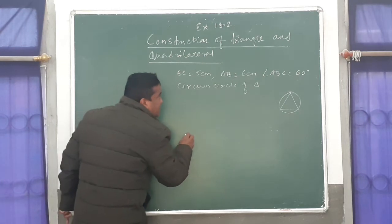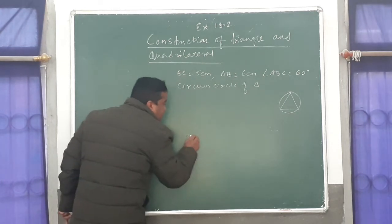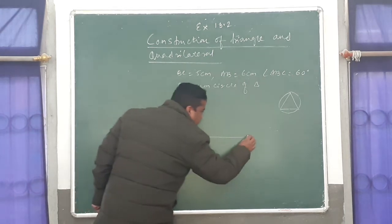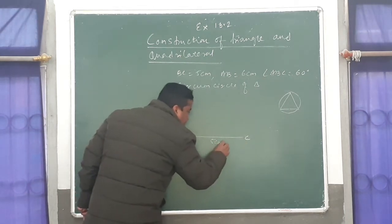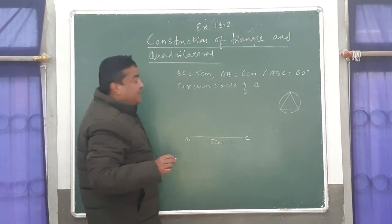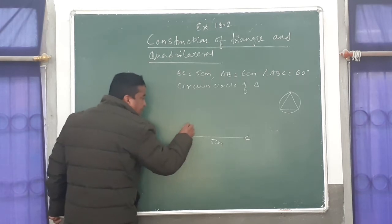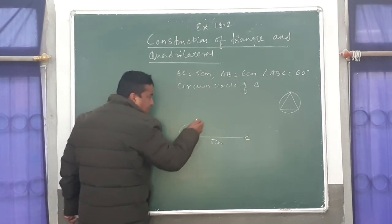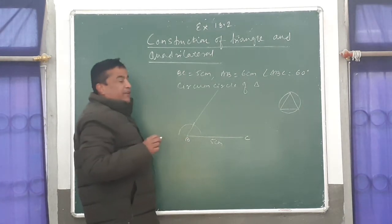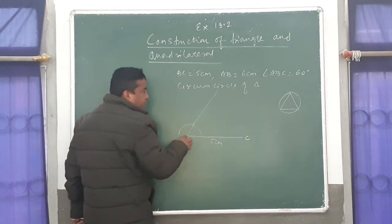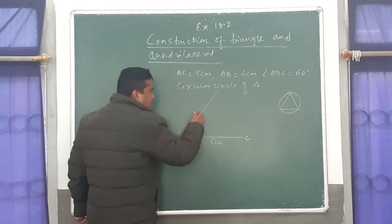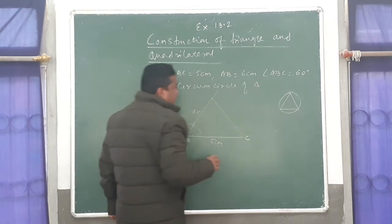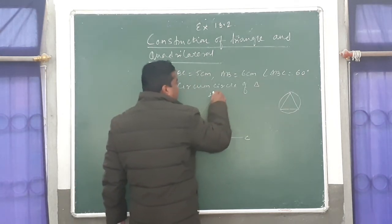First take BC which is 5 centimeter, and angle ABC is 60 degree — draw the arc at 60 degree and join it. The value of AB is given which is 6 centimeter, so from here mark 6 centimeter and write A. So that ABC is the required triangle.